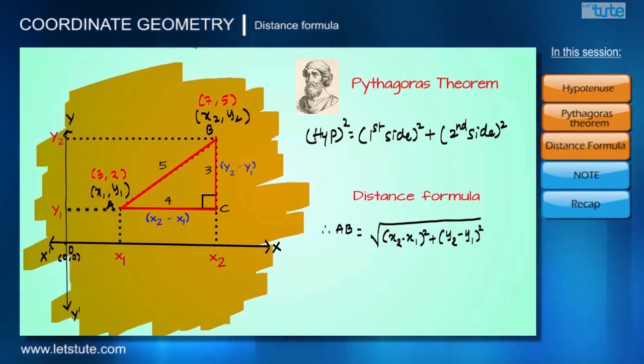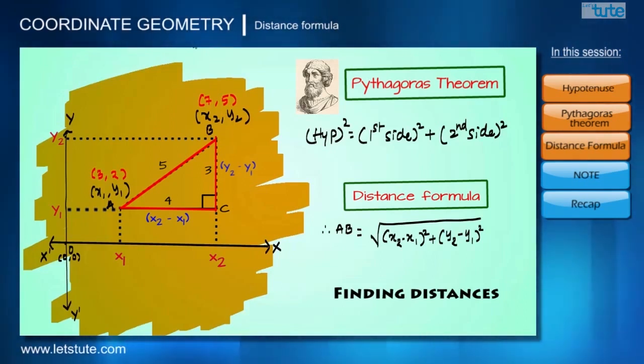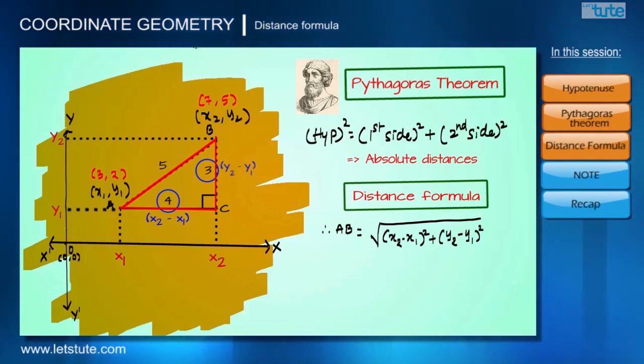So what do we understand from all this? That distance formula is derived from Pythagoras theorem and both are useful in finding distances. The only difference is Pythagoras theorem is used when absolute distances are known, whereas distance formula is used when coordinates of the points are known.